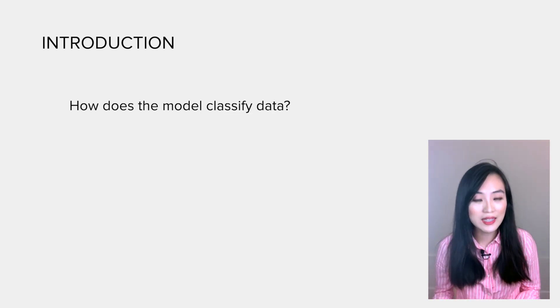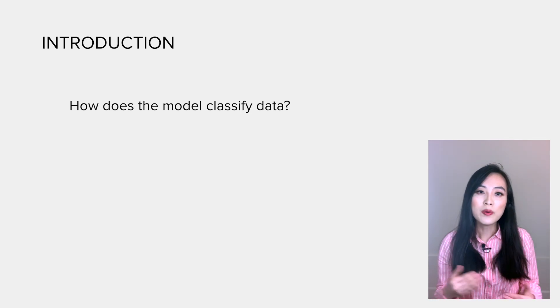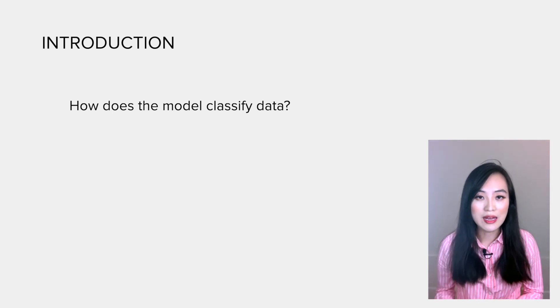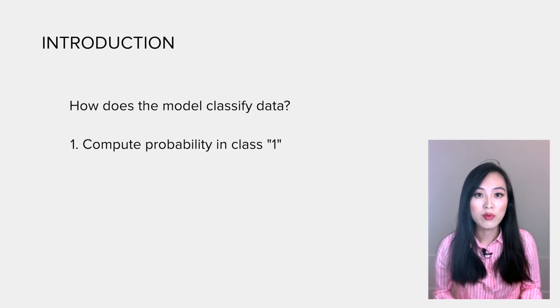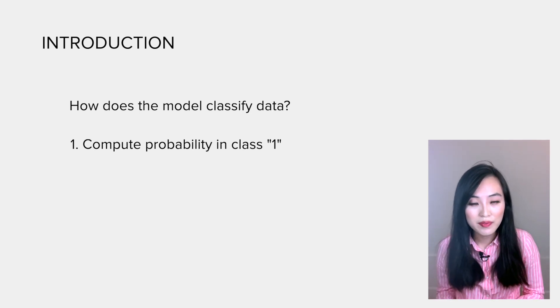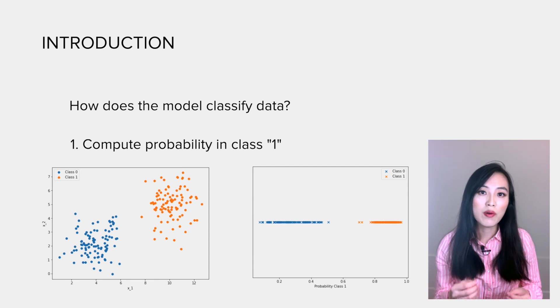Now you know what logistic regression could do. The next question might be: how does it do it? To put it simply, there are only two steps. The first step is to get the probability of classifying a data point in class 1.